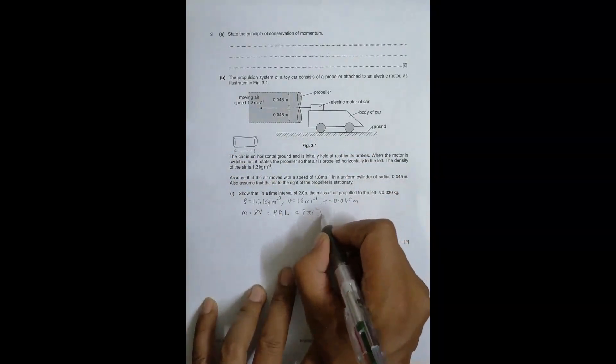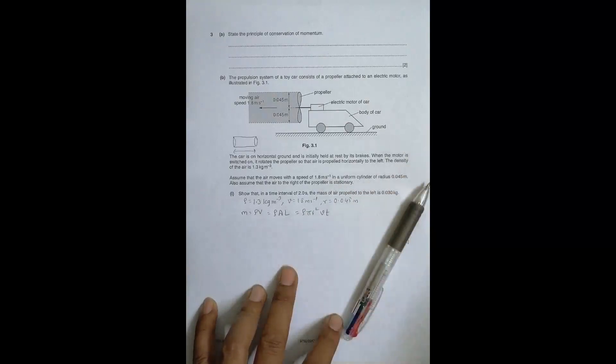Then this l is equal to velocity into time. We have to assume that the velocity is uniform, so the formula for length should be equal to vt. It comes from the formula s equal to ut plus half at squared. If a equal to 0, s equal to ut.